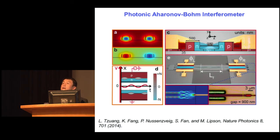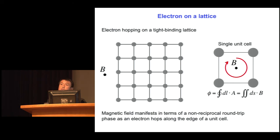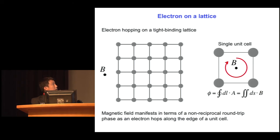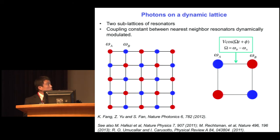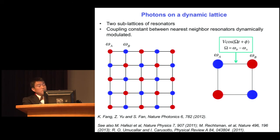I've shown you how we can get an effective gauge potential for light. The natural next step is to convert this into an effective magnetic field, so that you can do many of the fascinating physics of electrons in a magnetic field, but now with photons. In electron physics, if you have a tight-binding lattice — electrons hopping around sites — and you apply a magnetic field, the effect shows up as a phase acquired as an electron goes around the edge of one unit cell. To implement that on the photonic side, you imagine a lattice of resonators where nearest-neighbor sites have different resonant frequencies. You modulate the coupling constant between nearest-neighbor sites with a frequency equal to the frequency difference, but with a modulation phase. This modulation phase distribution gives you the effective magnetic field.